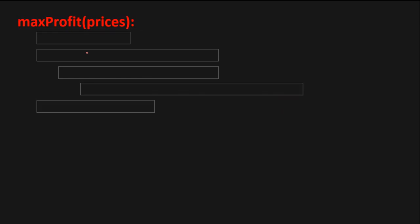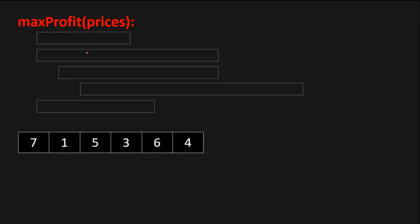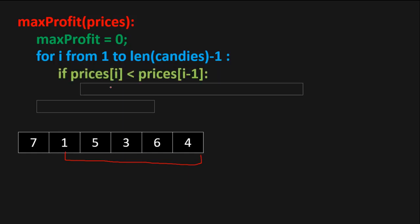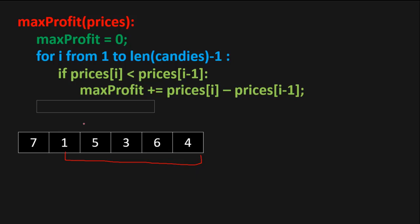Now let's look at the pseudo-code. We declare a function that takes an array as input. We declare a variable max profit equals to 0. Then we iterate through the given array from the second element to the end. We check the previous element and the current element — if the previous element is less than the current element, we calculate our profit.